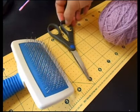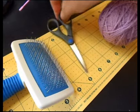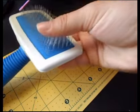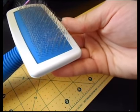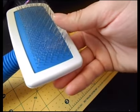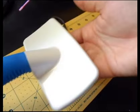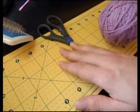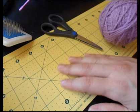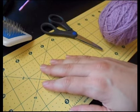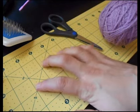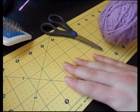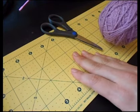We have our yarn here, some scissors, and also a slicker brush with nice strong wire bristles. It's the kind of brush that you use for brushing the excess fur off of a dog or cat. Underneath everything we have a cutting mat which is just to keep the surface of our work area from getting scratched up by all the wire bristles when we brush.